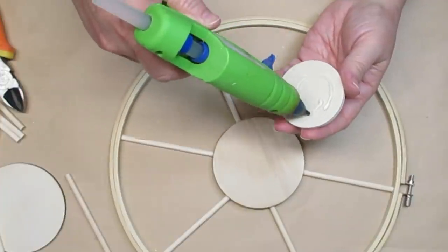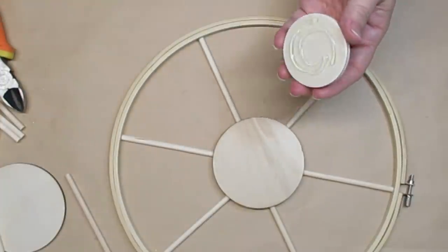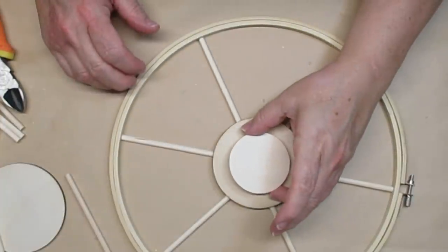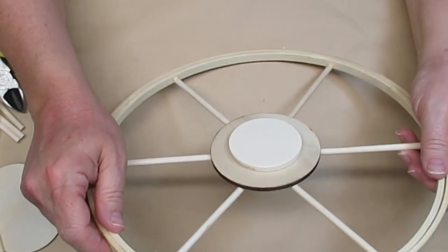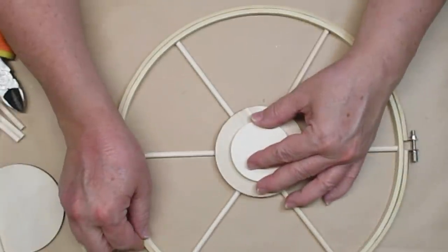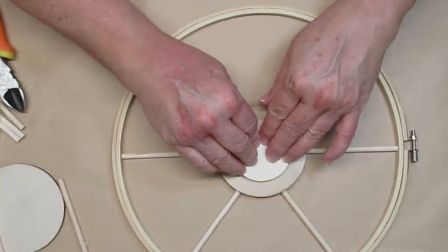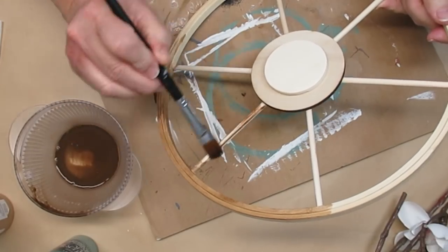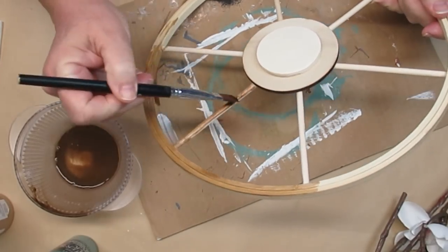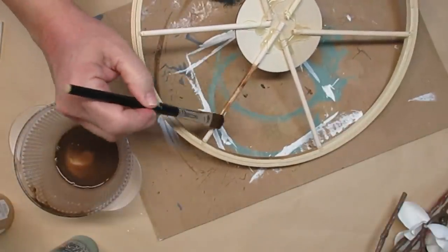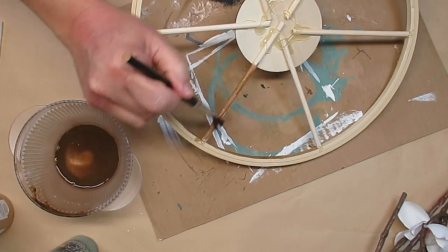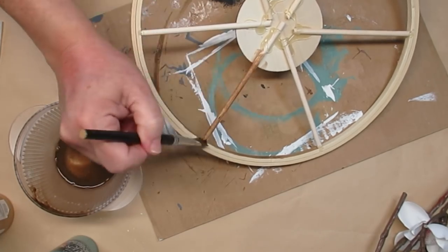Once that glue has dried I can flip it over and add this other smaller piece of wood round also from the Dollar Tree, and then I'm set to start staining. I think so far my wagon wheel looks pretty cool. To stain the wagon wheel I'm using dark walnut gel stain and I'm diluting it a little bit with water because I want it to be absorbed right into the wood.